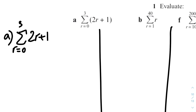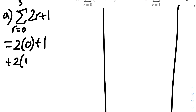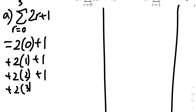We could split this into two times the sum of r, but it will be way too complicated. An easy way to do it is just do it manually by exhaustion — substituting r equals zero, r equals one, r equals two, and r equals three. So when r equals zero it'll be two times zero plus one; when r equals one it'll be two times one plus one; when r equals two it'll be two times two plus one; and when r equals three it'll be two times three plus one. That gets us 16, so the answer is 16.